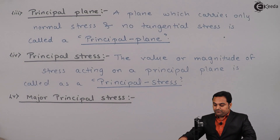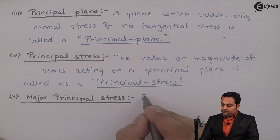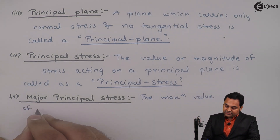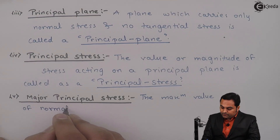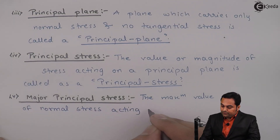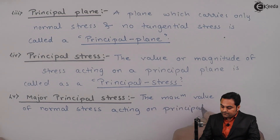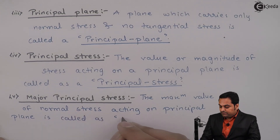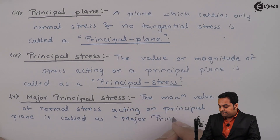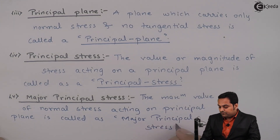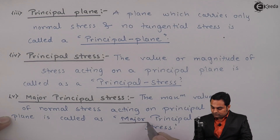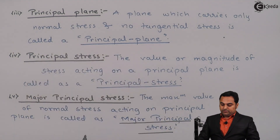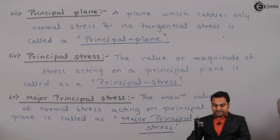Next, major principal stress. The maximum value of normal stress acting on a principal plane is called major principal stress. So the maximum value of stress on the principal plane is called major principal stress.